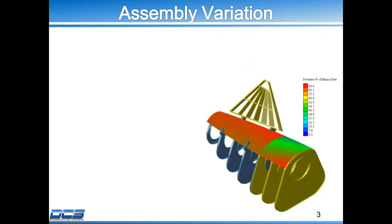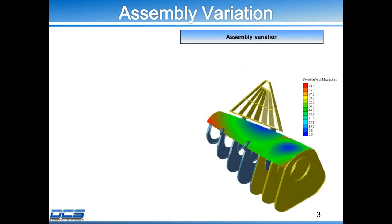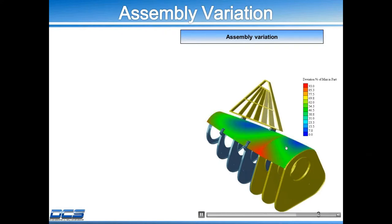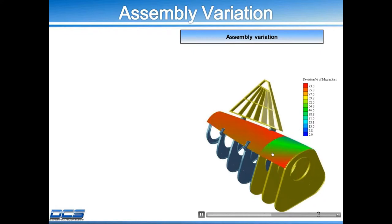So we have two methods of color mapping. First, I want to start off with assembly variation. If you look at the bottom right-hand corner of this model here, it's just a simple tail fin model. I chose to color map the two sections of the fuselage. Basically, as it goes to the build, it's showing you the variation — color mapping based on the deviation from the nominal position.